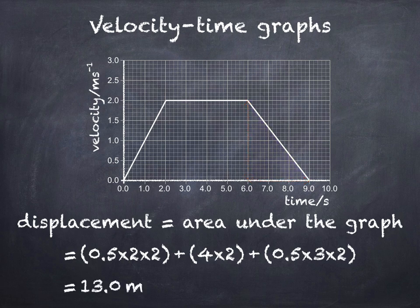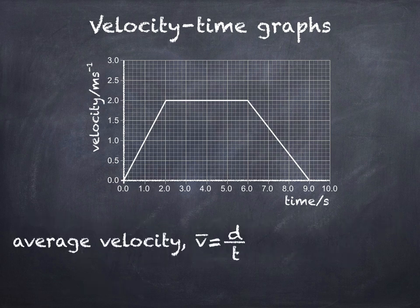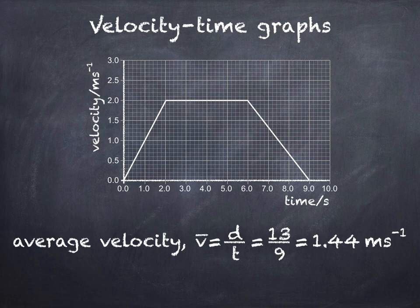This value can then be used to calculate the object's average velocity using this equation. Average velocity v-bar is equal to displacement over time. We found that the total displacement was 13 meters and total time was 9 seconds, so average velocity is 13 divided by 9, which is 1.44 meters per second. This is the constant velocity an object would need to travel at in order to cover an equal distance in the same amount of time.